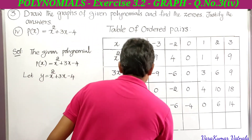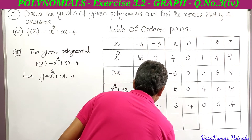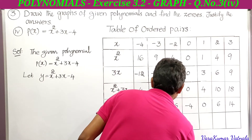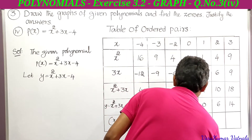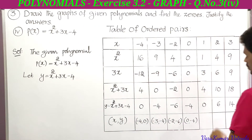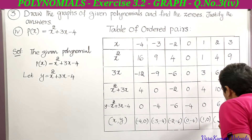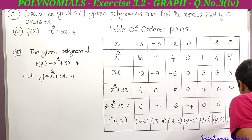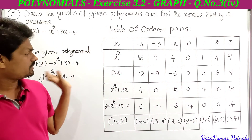The ordered pairs are: (−4, 0), (−3, −4), (−2, −6), (0, −4), (1, 0), (2, 6), (3, 14). These are the ordered pairs of the given quadratic polynomial x² + 3x − 4.